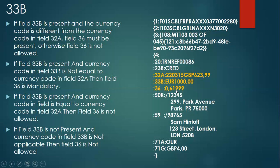If the 33B currency is different from the 32A currency, field 36 becomes mandatory. Field 36 is the exchange rate — it only comes into the picture when there is a cross-currency payment. In this example, 33B is the instructed amount in euro, the customer's account currency. The bank — let's say Standard Bank France — has its nostro account in JPY currency, making this a cross-currency payment.